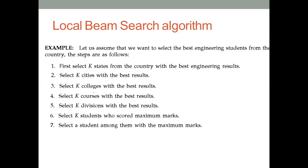One example is when you want to choose the best engineering student of a country. We start from selecting the best results, K cities with the best results. With those cities, we are going to find the K colleges with the best courses and best results, then which courses the students have. We are going to list K number each and every time.